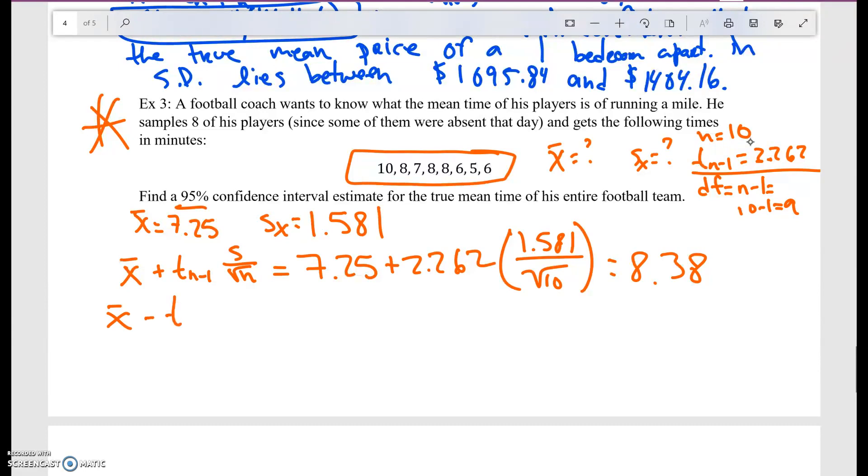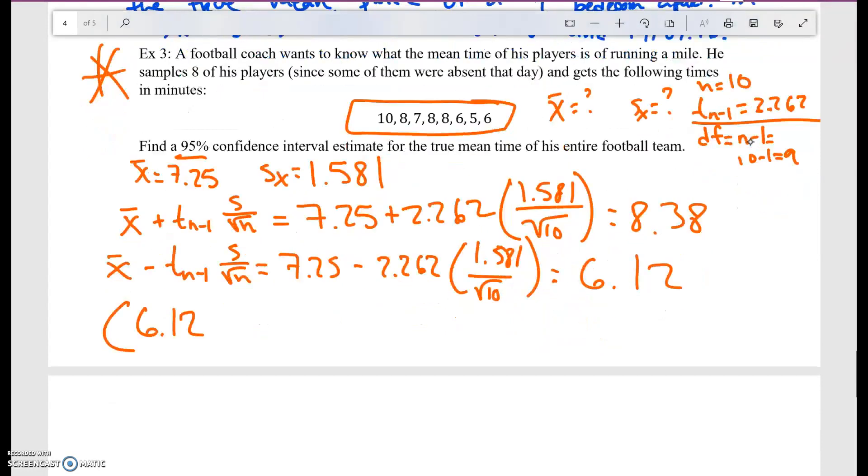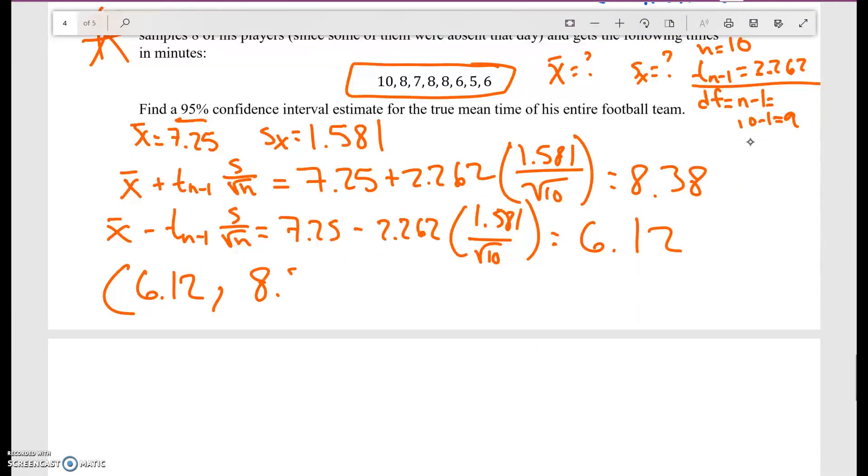Now I'm going to do the same thing, but now with a minus. So 7.25 minus 2.262, 1.581 divided by square root of 10. I'm going to write exactly the same thing, but now I'm going to change that to a minus. And what am I going to get? I'm going to get 6.12. So basically my confidence interval estimate was between 6.12 and 8.38.